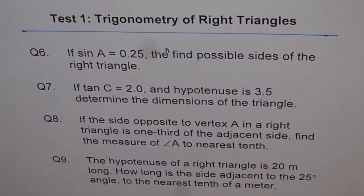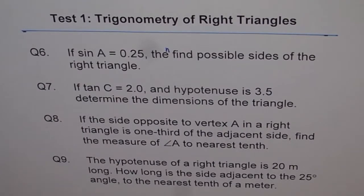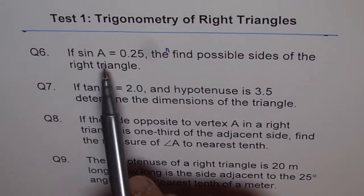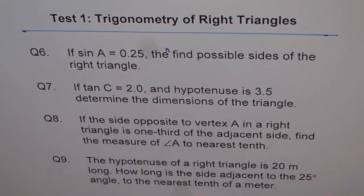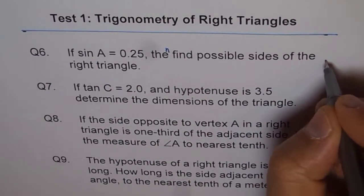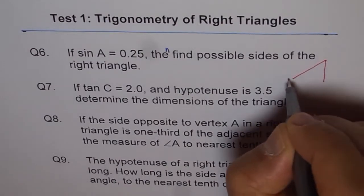These four questions are kind of similar, and here is my hint or suggestion to do these problems. The first one: if sine A equals 0.25, then find possible sides of the right triangle. It's kind of an open question, so what we can do is just make a triangle here, a right triangle.